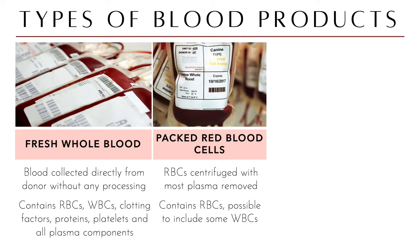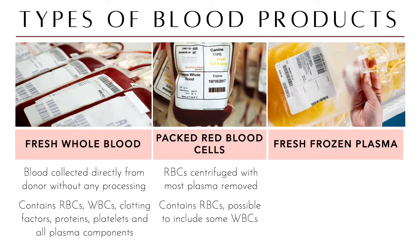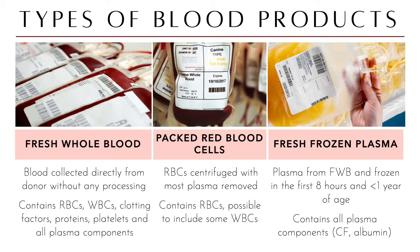Packed red blood cells, as the name indicates, contain only RBCs — these are centrifuged with most plasma removed, and may include some WBCs. The third product is plasma. Fresh frozen plasma is plasma from fresh whole blood frozen within the first eight hours after collection, good for one year from collection date, and contains all plasma components, clotting factors, and albumin.